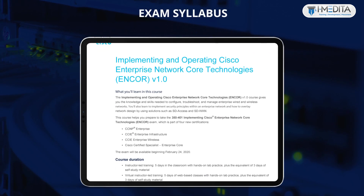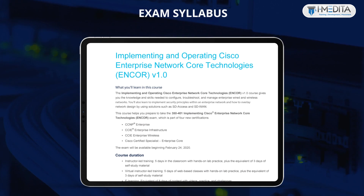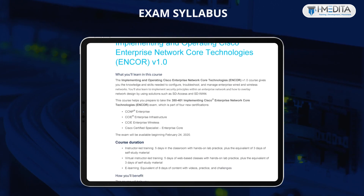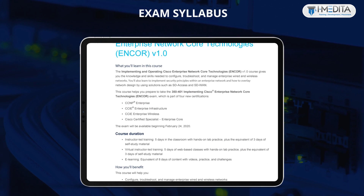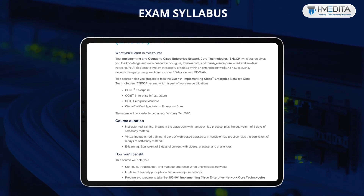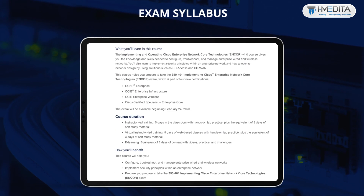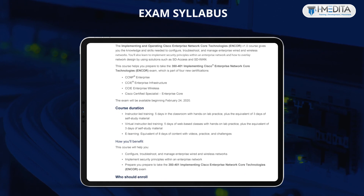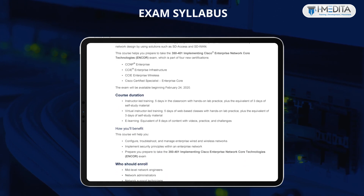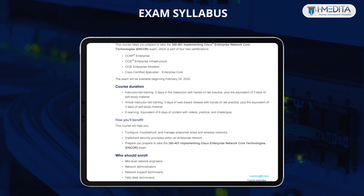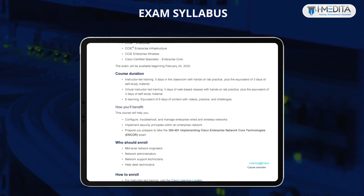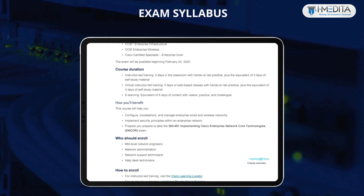The CCNP Enterprise certification syllabus is vast and elaborate. It ranges from understanding Cisco Enterprise Network Infrastructure — EIGRP, OSPF, EBGP — to understanding programming. The lab outline also comprises sufficient knowledge to develop the skills required to qualify the CCNP Core certification. The syllabus link is placed in the description box below.